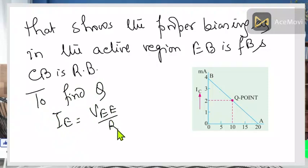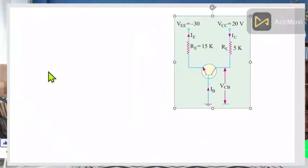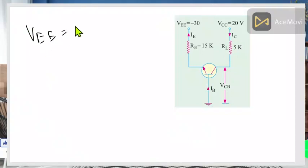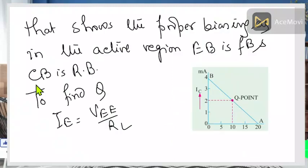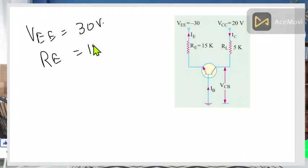To find the Q-point, we find IE, which is VEE divided by RL. Looking at the circuit diagram, VEE is 30 volts and RE is 15 kilohms — you take the RE value because it is a different configuration. Now you can find IE. These types of problems appear in books like Millman and Halkias.